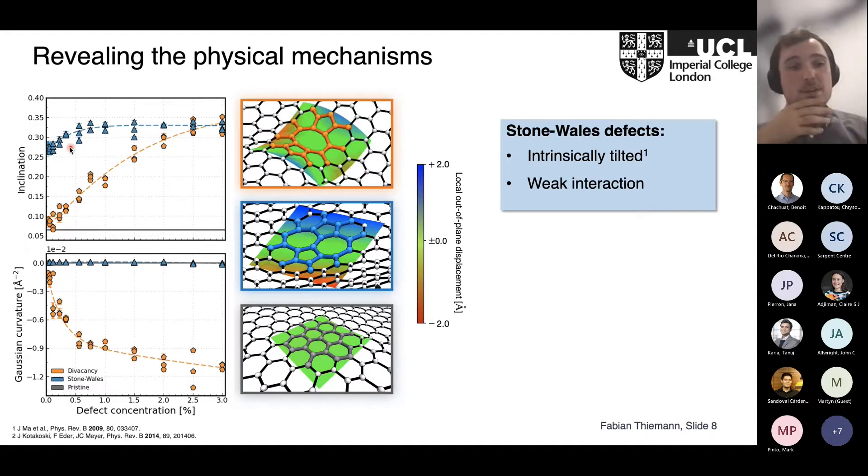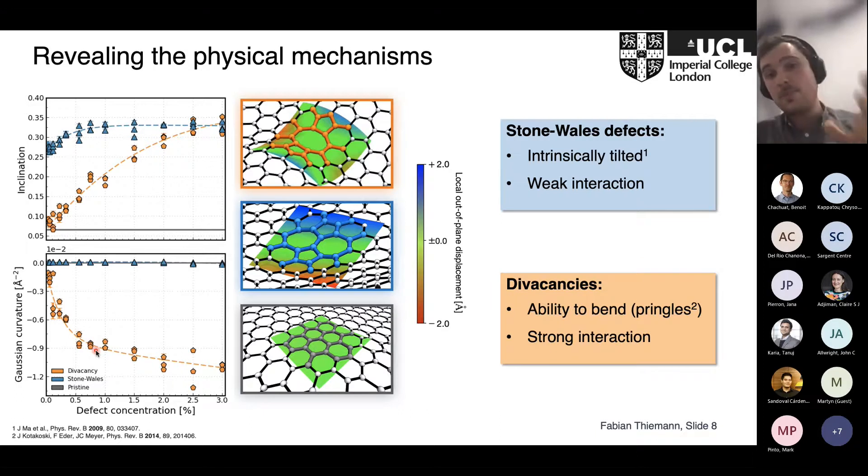If you compare this to the divacancies, this is a completely different picture. Starting at the curvature, we can see first of all it's not zero—we find a value for an isolated defect—and it can increase by an order of magnitude if you go to high concentrations. It's always negative, which corresponds to this kind of wrinkle shape shown here because they have opposite signs. For the inclination, this is quite significant, going from basically the pristine case for an isolated defect to the Stone-Wales reference value. This is probably induced by the high curvature basically forcing the defect first to bend and then also to tilt. So basically, divacancies are able to bend but they also really strongly interact and couple with each other. This is interesting because now we see that although both defects introduce high corrugation, the mechanisms behind this are very different, which could suggest a richer variety if we look at different defects.